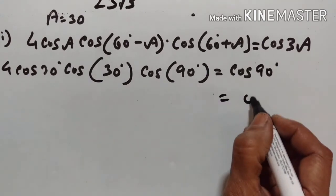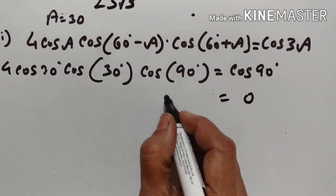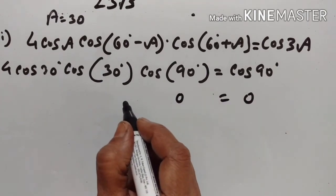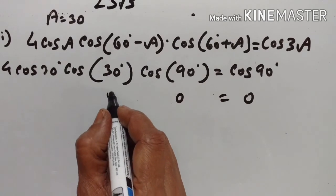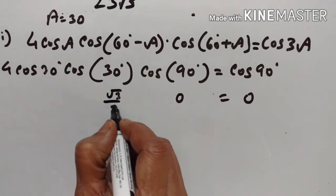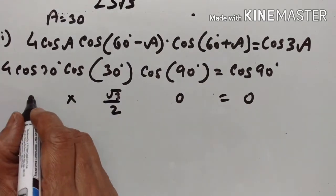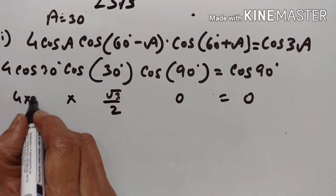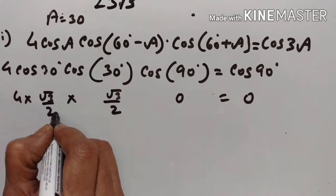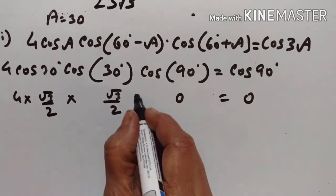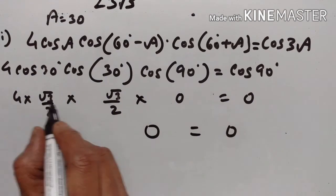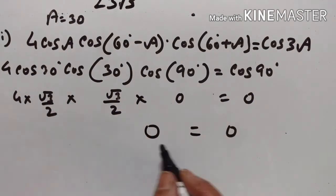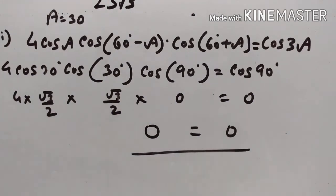This expression is equal to 0. Cos 30 is equal to square root of 3 upon 2. Anything into 0 is equal to 0, so we need not calculate all this. Therefore 0 is equal to 0. LHS is equal to RHS.